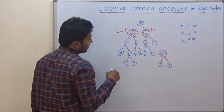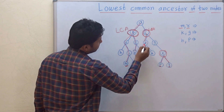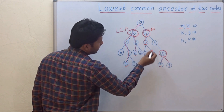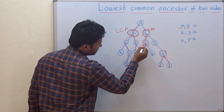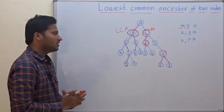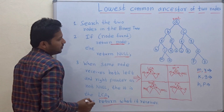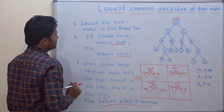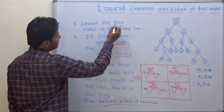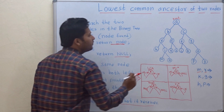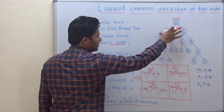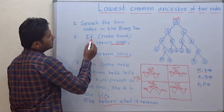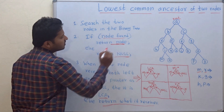Some more examples. Suppose you want to find out the lowest common ancestor between K and F — the lowest common ancestor is F itself. So these are the steps for finding out the lowest common ancestor. The first step is: search the two nodes in the binary tree. So you have to search M and R in this binary tree. The second step is: if that node is found, then you have to return that node.